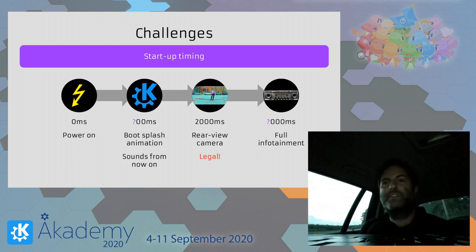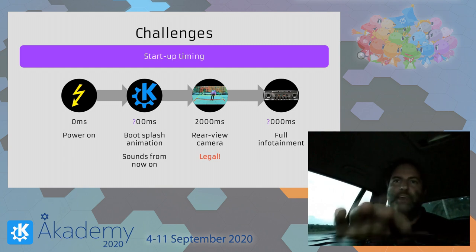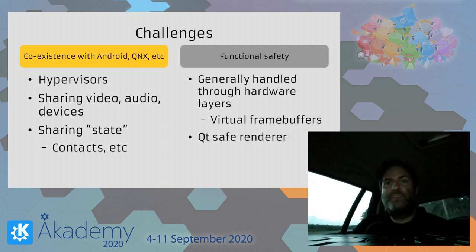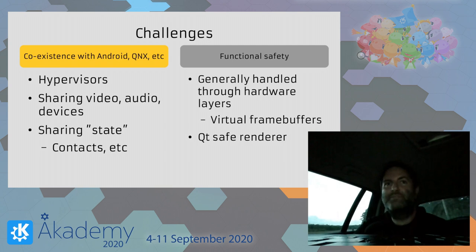Two more challenges that are good to be aware of but hard to solve in a generic open source way because they involve non-open source technology. One trend is hypervised systems — to some extent you have another system, be it QNX or Integrity, driving functional safety subsystems, or even a full Android system sitting next to you. Here the sharing of video, audio, compositing of graphics, and resource sharing are important factors to take into account.